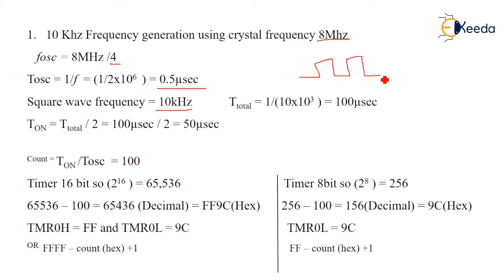The square wave we want is 10 kilohertz. The total time is T_on plus T_off, so total time will be 1 upon the total frequency, which is 100 microseconds. T_on equals T_total divided by 2 because we are generating a square wave, so T_on and T_off both will be equal. So T_on equals 100 microseconds divided by 2, which comes to 50 microseconds. So the count is T_on divided by T_oscillator, which equals 100.